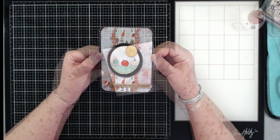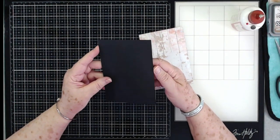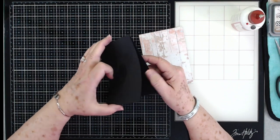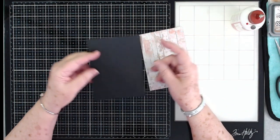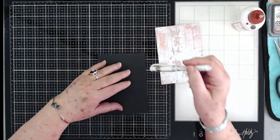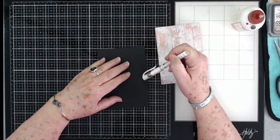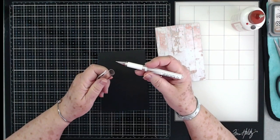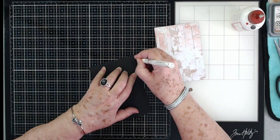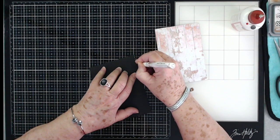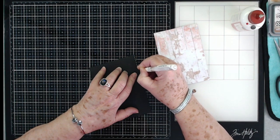Alright, let's get into the video. The very first thing you're going to need is a card base, and this one is a top folding card, four and a quarter by five and a half. I'm just going to take my pen and do some stitch lines around it. This is a Signo white gel pen. I'm just going to do some stitch marks around the edges before I put anything else down.